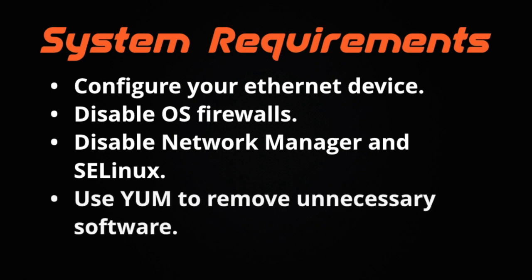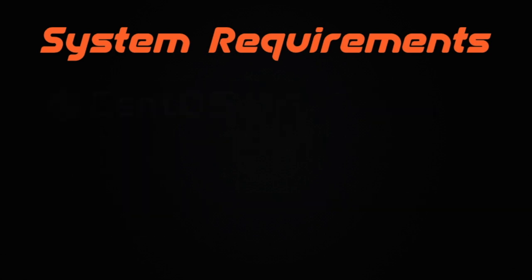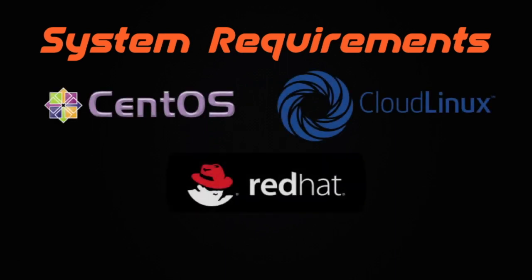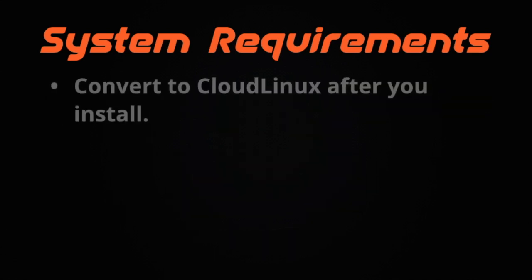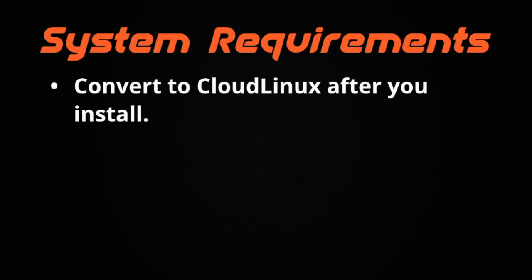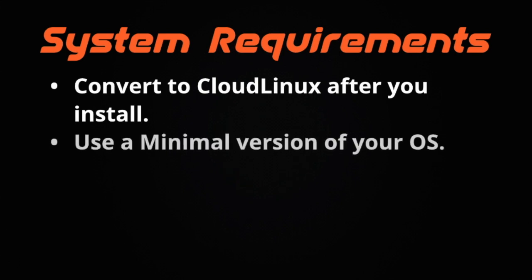It's a good idea to use Yum to make sure you don't have any unnecessary software sitting around on your server. Now, let's talk about your server itself. We support CentOS, CloudLinux, and Red Hat Enterprise Linux versions 6 and 7. If you want to use CloudLinux, make sure to convert to CloudLinux after installing cPanel and WHM — installing CloudLinux before cPanel and WHM can cause problems. Make sure to use a minimal version of your OS, as non-minimal versions often come with preloaded software that may cause conflicts with cPanel and WHM.